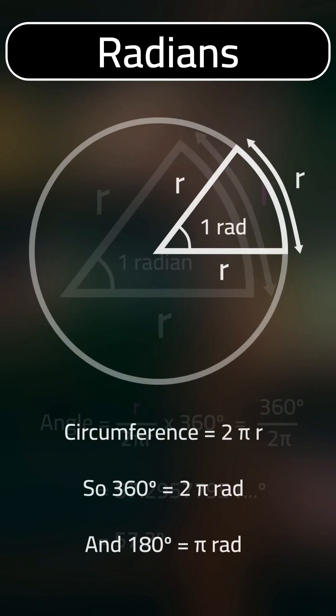A complete turn of 360 degrees is equivalent to 2 pi radians and half a turn of 180 degrees is pi radians.